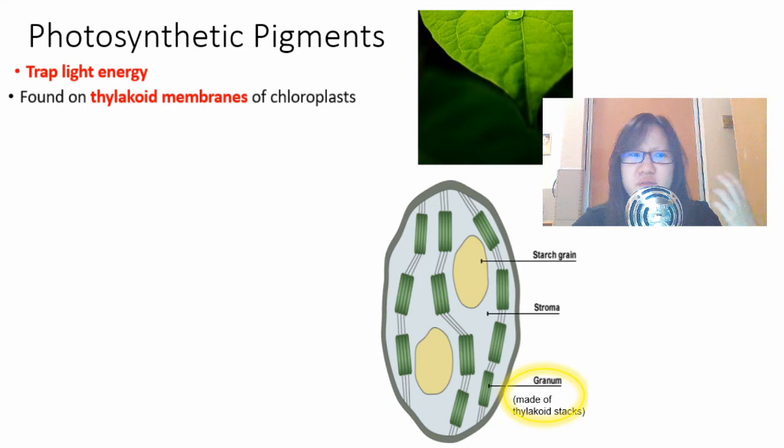Photosynthetic pigments are found on the thylakoid membrane of chloroplasts. I'm not sure if you remember the structure of chloroplast but it looks like this. It is the second largest organelle in a cell. They have granum which is thylakoid stacks, stroma which is the fluid inside, and sometimes even some starch grains. We will be able to find photosynthetic pigments in this thylakoid stack here.